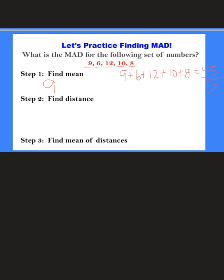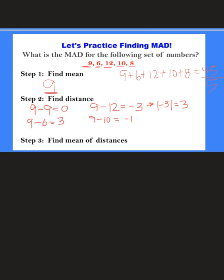The next step is to find the distance of each number in the data set from the mean. Our mean is 9. So our first number is 9, and 9 minus 9 is 0. Now, how far is 6 from 9? 9 minus 6 is 3. For 12: 9 minus 12 is negative 3, but we take the absolute value, which is 3. For 10: 9 minus 10 is negative 1, absolute value is 1. And then 9 minus 8 gives us 1.